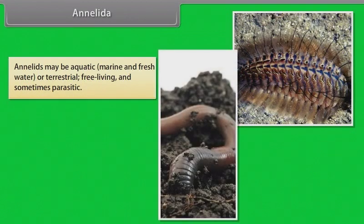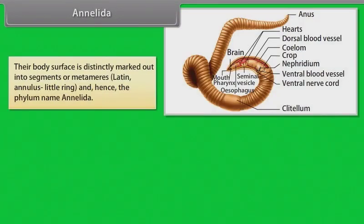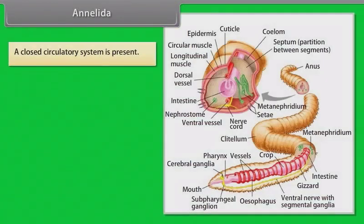Annelida: Annelids may be aquatic — that is marine and freshwater — or terrestrial, free-living and sometimes parasitic. They exhibit organ system level of body organization and bilateral symmetry. Annelids are triploblastic, metamerically segmented and coelomate animals. Their body surface is distinctly marked out into segments or metameres, which is a Latin word meaning annulus — little ring — and hence the phylum name Annelida. They possess longitudinal and circular muscles which help in locomotion. A closed circulatory system is present.